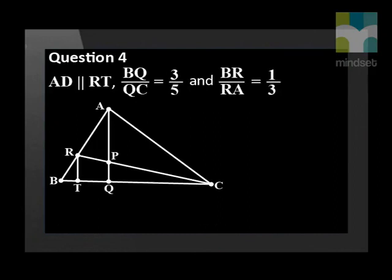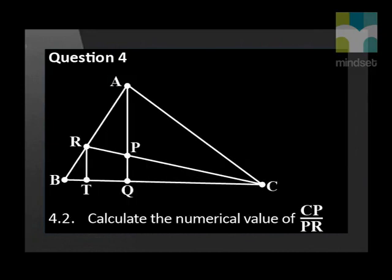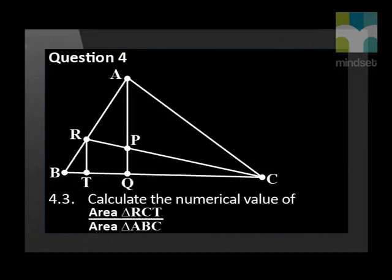Question 4. In the figure AQ is parallel to RT, BQ over QC is equal to 3 fifths and BR over RA is equal to 1 third. If BT is equal to X, calculate TQ in terms of X. Calculate the numerical value of CP over PR. Calculate the numerical value of area of triangle RCT over area of triangle ABC.